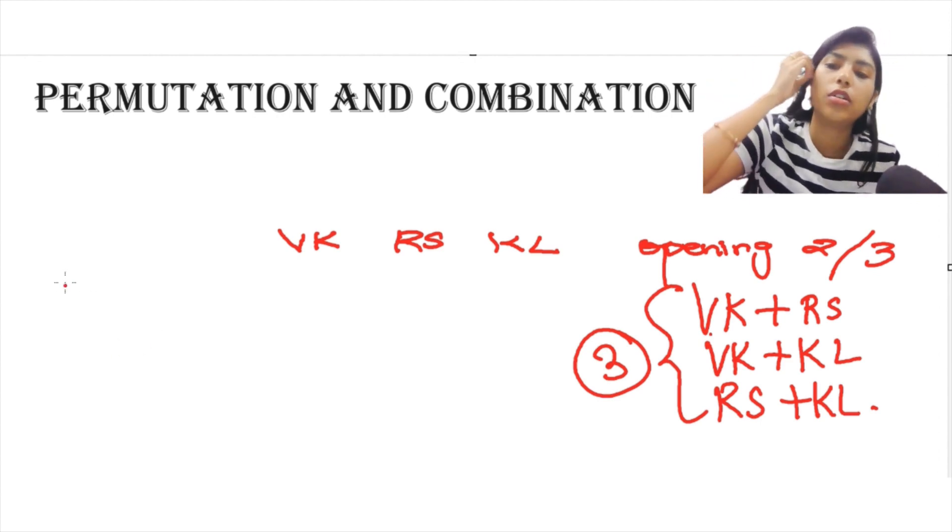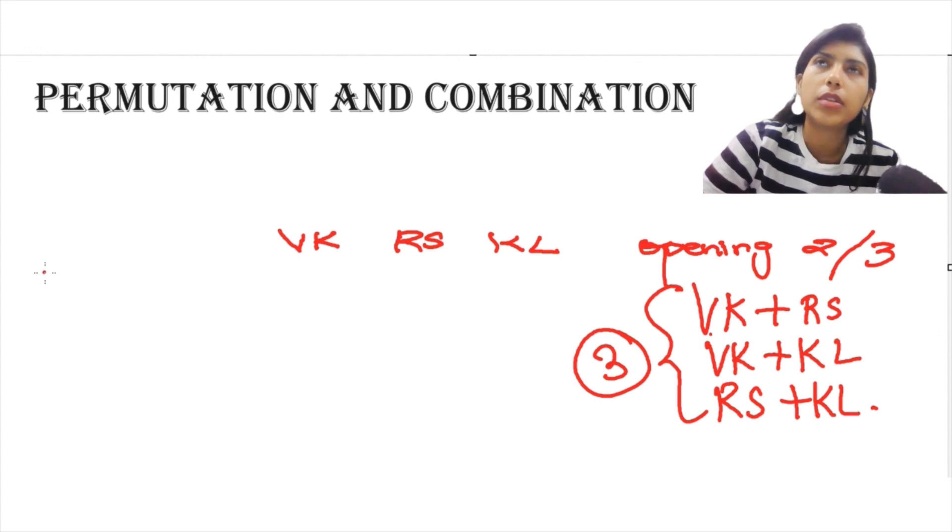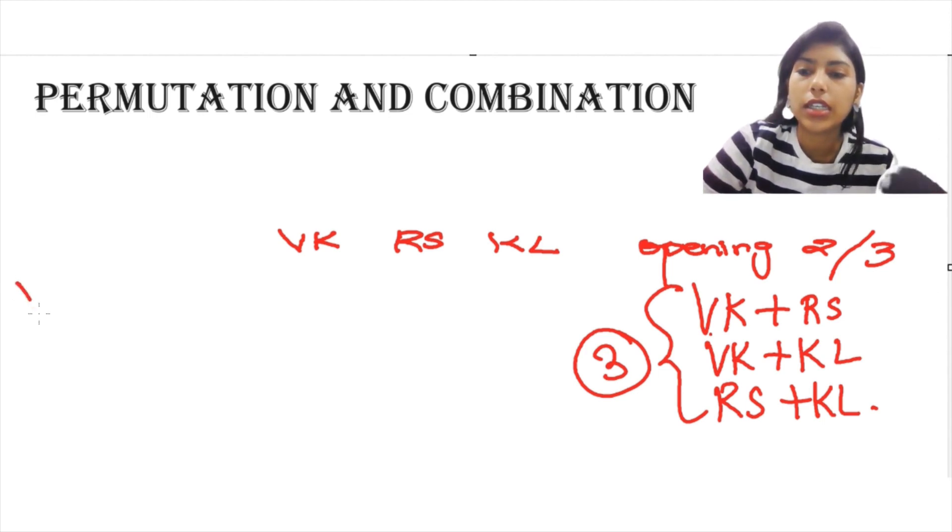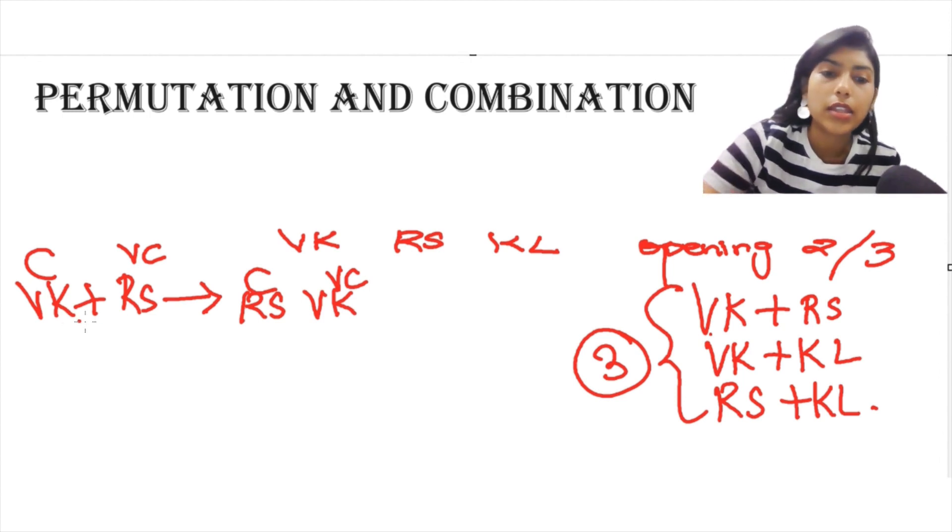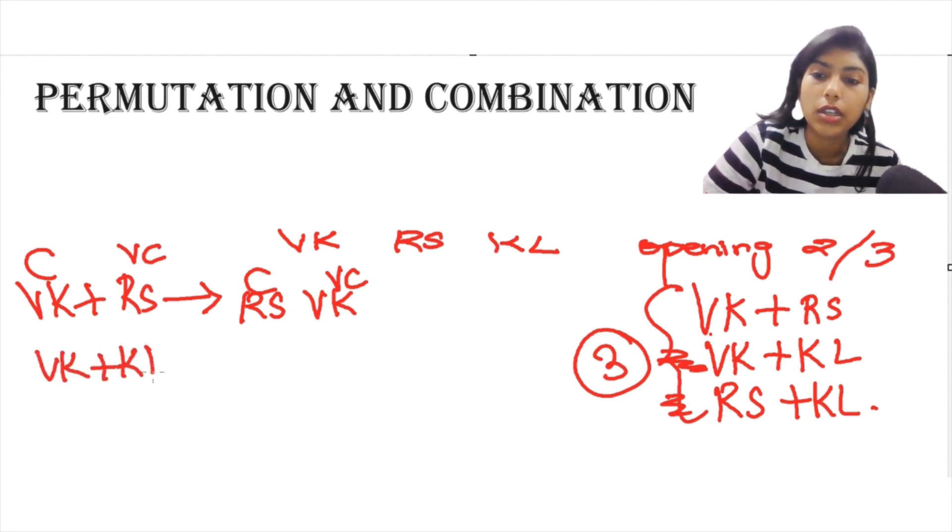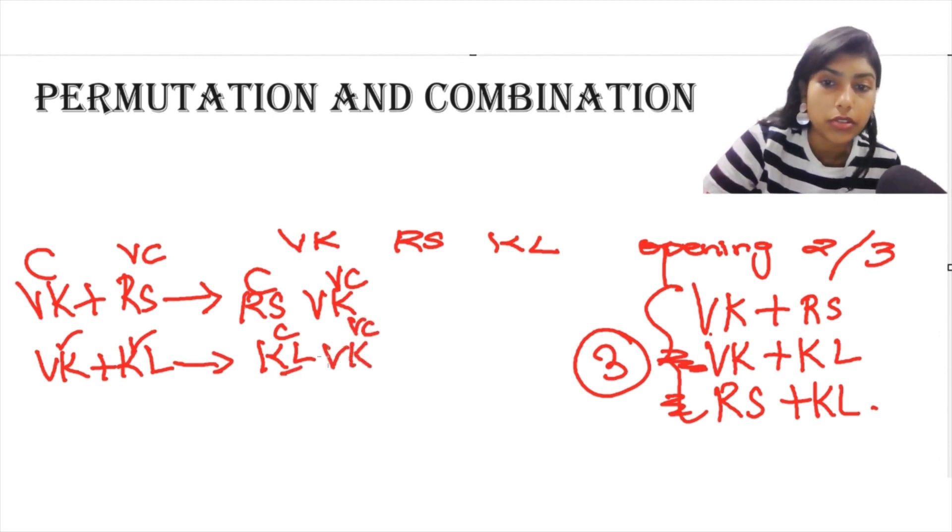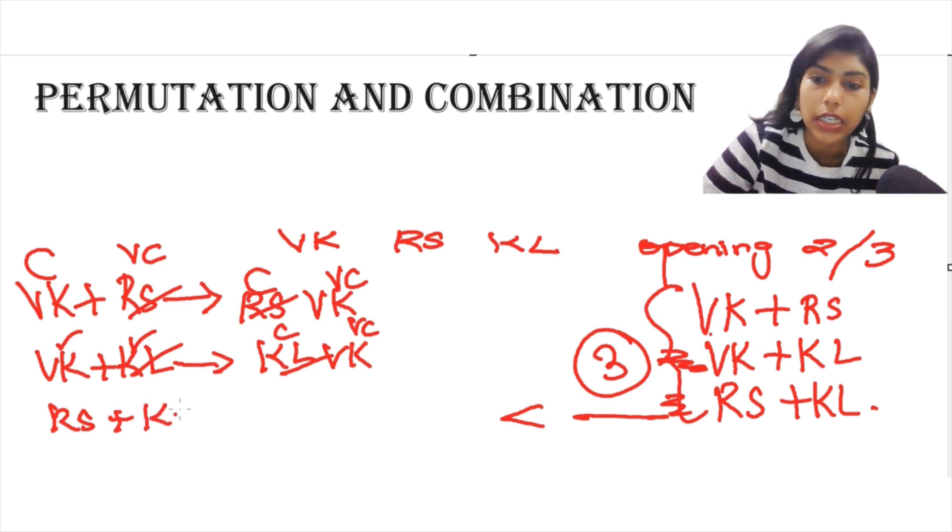But let me take one more case where I want to select two people and those two people are for the positions of captain and vice captain. I am going to select, let's say, Virat Kohli and Rohit Sharma. Now, I can say Virat Kohli can be the captain and Rohit Sharma can be the vice captain. But then, I can also say Rohit Sharma can be the captain and Virat Kohli can be the vice captain. And that will apply to all these combinations as well. If I am choosing Virat Kohli and K.L. Rahul, Virat Kohli can be the captain and K.L. Rahul can be the vice captain. But K.L. Rahul can also be the captain and Virat Kohli can be the vice captain. This is also one possibility.